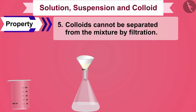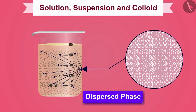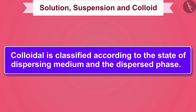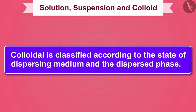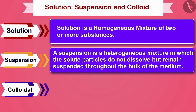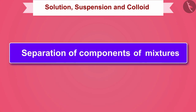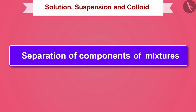The dispersed particle which remains in colloidal form is called the dispersed phase, and the component in which the dispersed phase is suspended is called the dispersing medium. Colloids are classified according to the state of the dispersing medium and the dispersed phase. So friends, we now have a good understanding of solutions, suspensions, and colloids. In the next video, we will study about the separation of components of a mixture.